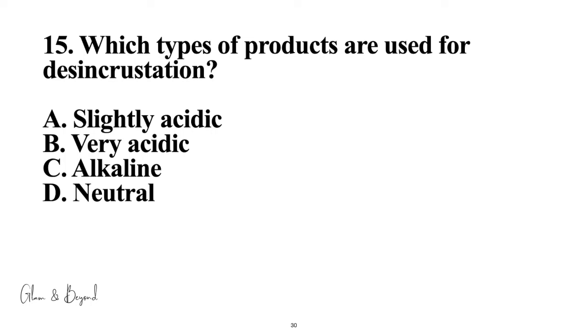Number fifteen: which types of products are used for disincrustation? A, slightly acidic; B, very acidic; C, alkaline; D, neutral. The answer is C, alkaline. Please remember that for disincrustation, you must use an alkaline solution, which is the product that is going to soften the pores to make extractions easier. That is the purpose of disincrustation.